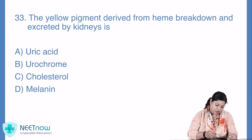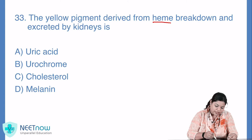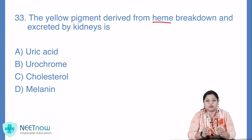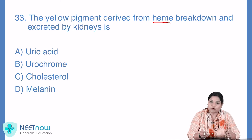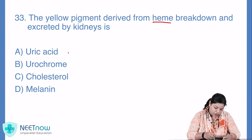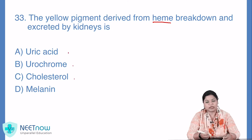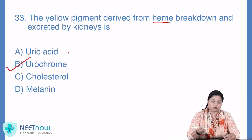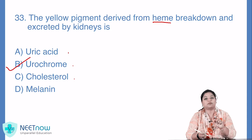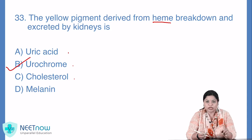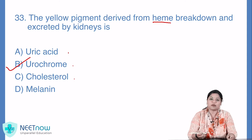Question number 33: the yellow pigment derived from heme breakdown and excreted by kidneys. Jab heme breakdown hota hai, yaani ki toot-ta hai, disintegrate hota hai, toh alag-alag pigment ki formation hoti hai. Yellow pigment jo hota hai usko kya kehte hain — uric acid, eurochrome, cholesterol ya melanin. Jaahan tak baat karen yellow pigment ki, wo hota hai aapka option B — eurochrome. Eurochrome is that pigment which is yellow in color and released when heme breaks down. So option B aapka yahan sahi hai.